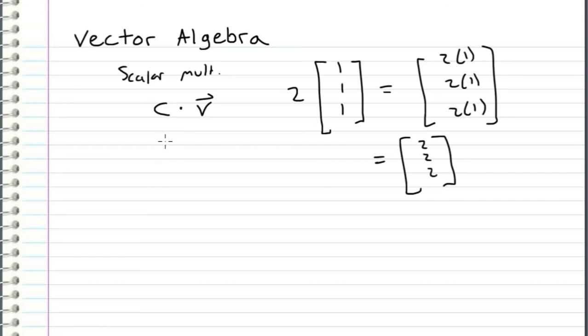And this works for any scalar C, where it doesn't have to be 2. It can be a negative number, a positive number, a real number, or even an imaginary number.